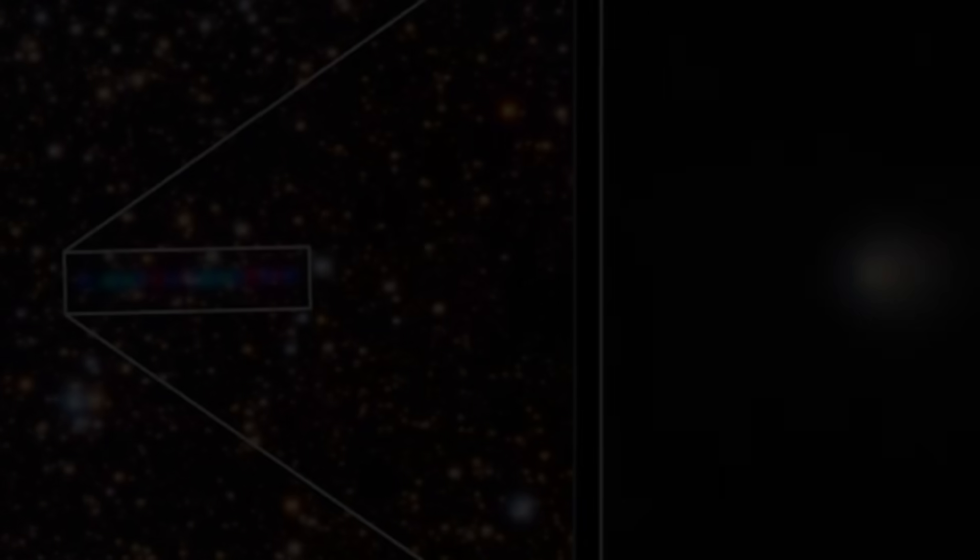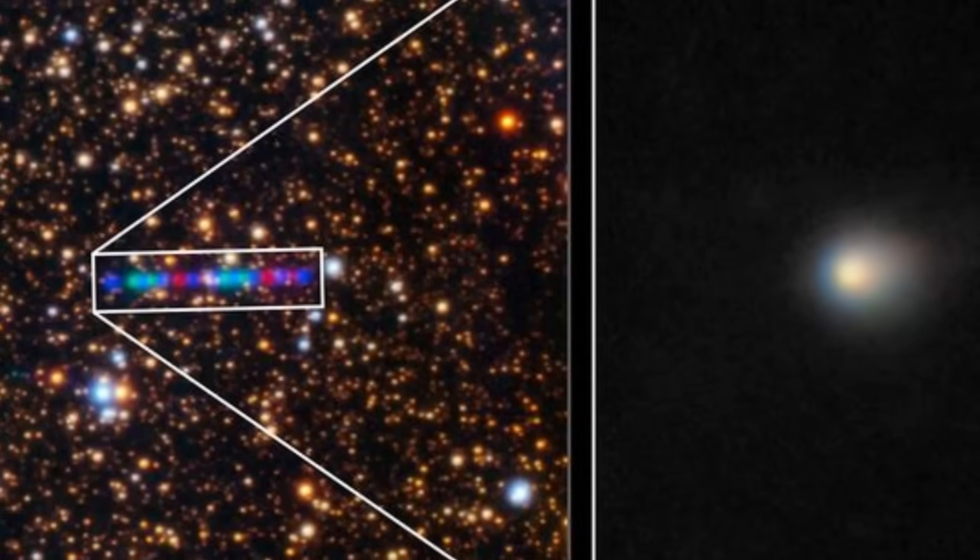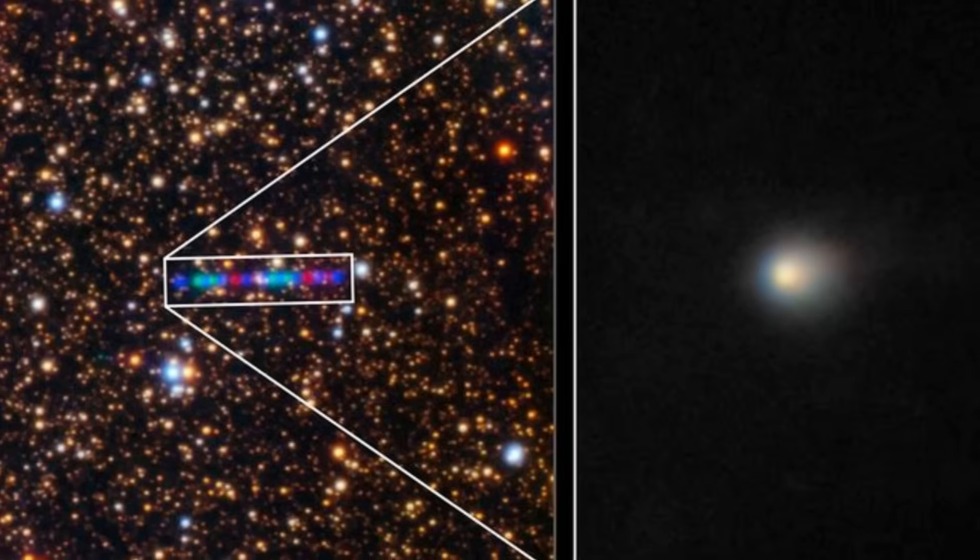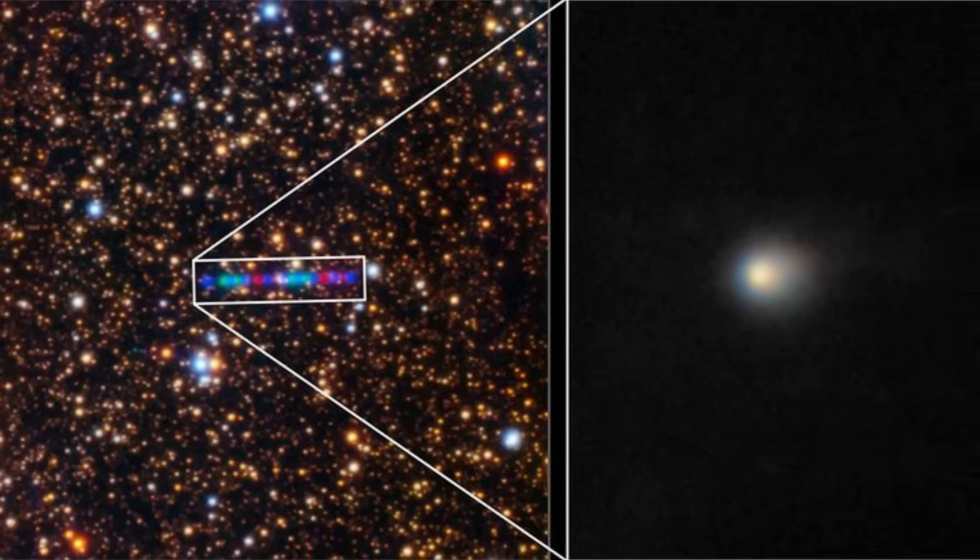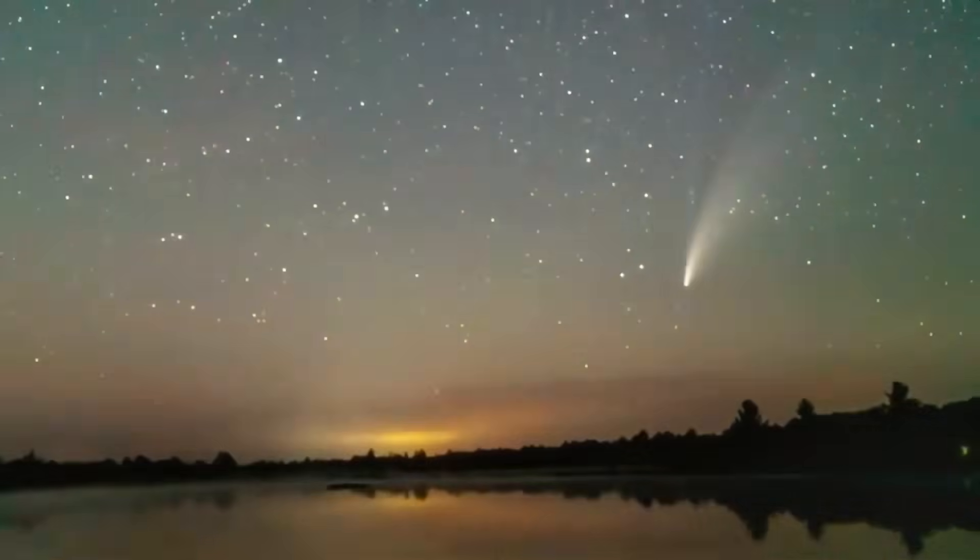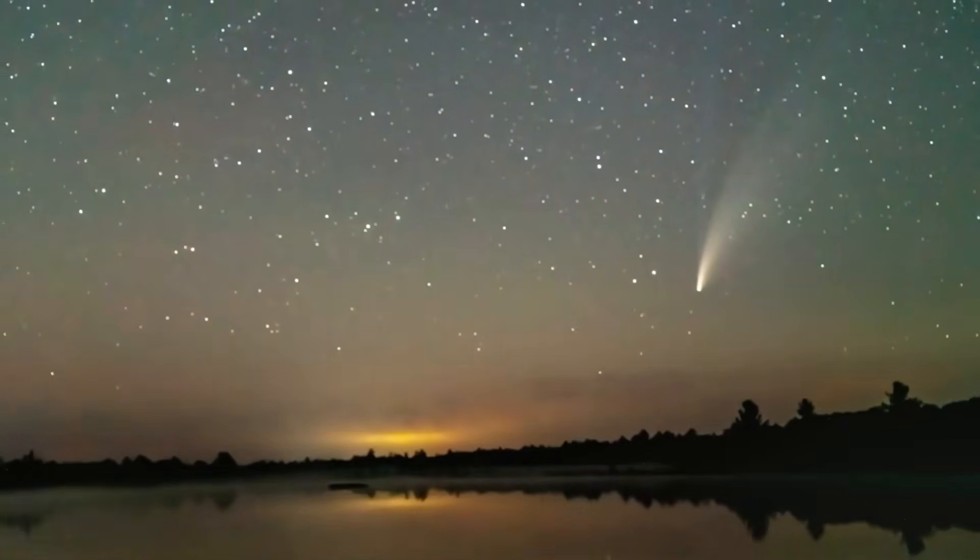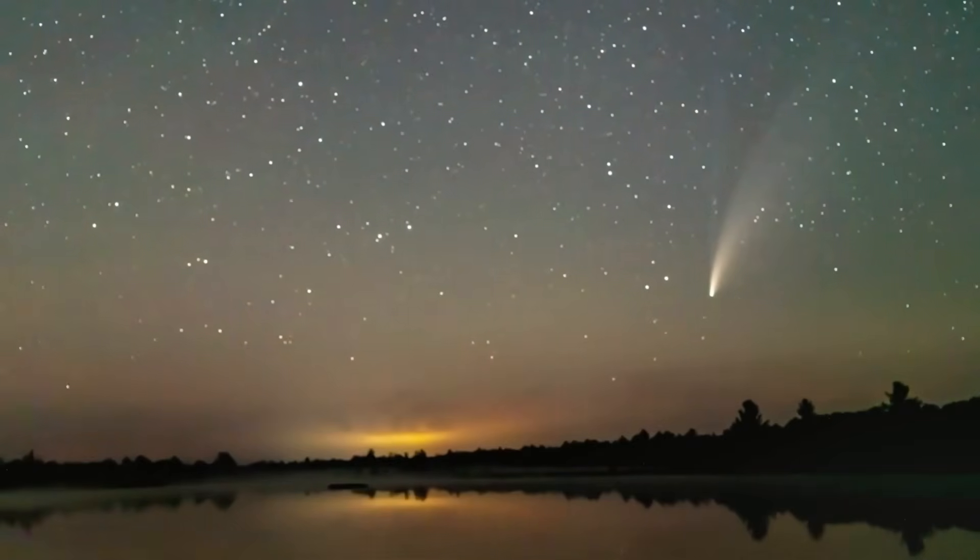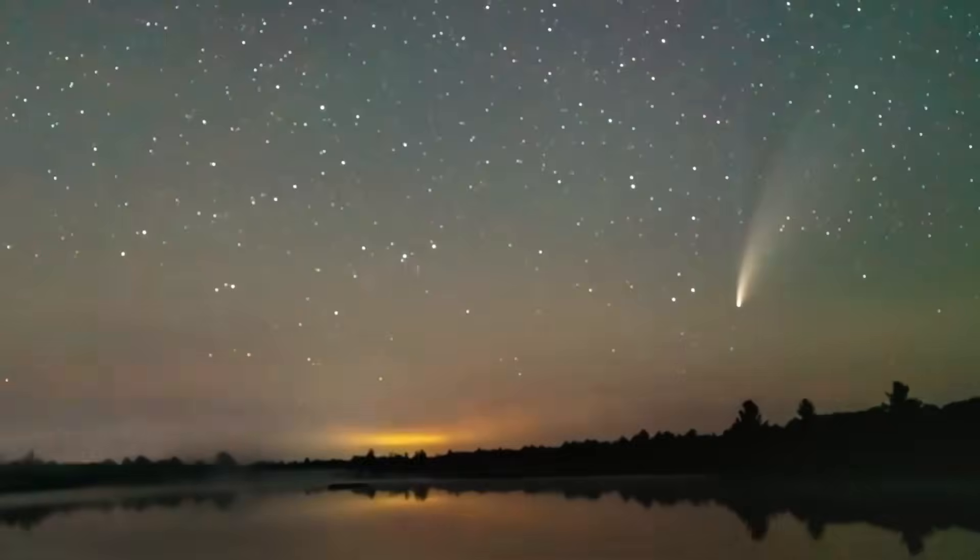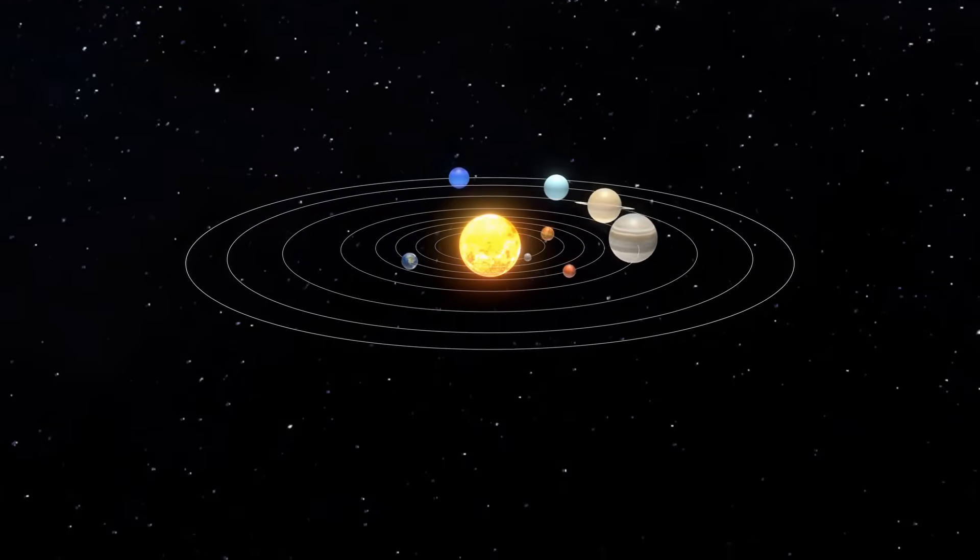It will enter this cosmic blind spot as a massive, still-growing anomaly, an object that was firing a bizarre, forward-facing light beam, an object that answered our call and then blocked our view. When it emerges on the other side, we will have absolutely no idea what it has become. This period of total blindness is the ultimate cliffhanger, a question mark hanging over the entire solar system.